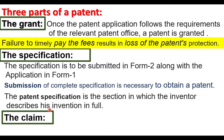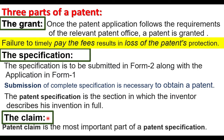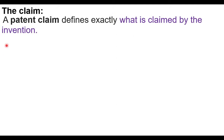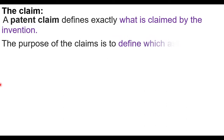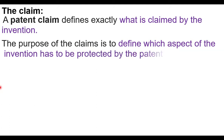The patent specification is the section in which the inventor describes the invention in full. The inventor explains the entire invention and its uses. The claim is the most important part of the patent specification. The patent claim defines exactly what is claimed by the invention — it exactly defines which aspect of the invention is to be patented and protected.